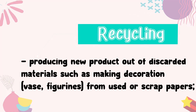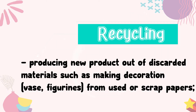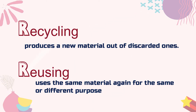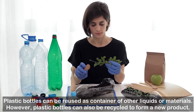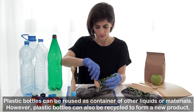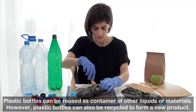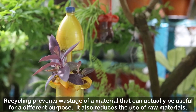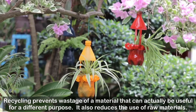The third R is recycling. It means producing new products out of discarded materials, such as making decorations like a vase or figurine from used or scrap papers. Recycling is different from reusing. Recycling produces a new material out of discarded ones, while reusing uses the same material again for the same or different purpose. For example, plastic bottles can be reused as containers for other liquids or materials. However, plastic bottles can also be recycled to form a new product. Recycling prevents wastage and also reduces the use of raw materials.